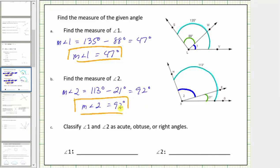Now for part C, we're asked to classify angle one and angle two as acute, obtuse, or right. The measure of angle one is 47 degrees. Because 47 degrees is greater than zero degrees and less than 90 degrees, angle one is an acute angle.